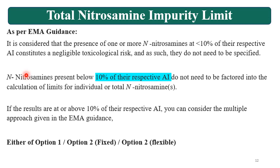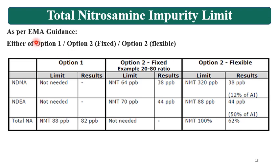If results are at or above 10% of their respective AI (acceptable intake), the multiple approaches given in EMA guidance — Option 1 (Fixed), or Option 2 (Flexible) — can be taken into consideration. In Option 1, impurities do not exceed 10% of the AI limit and specification is not required.